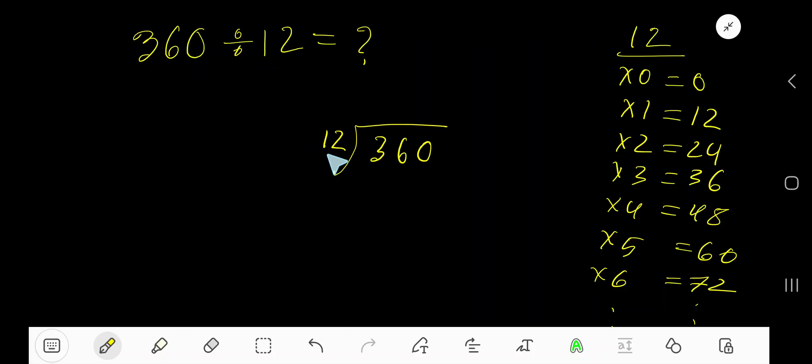360 divided by 12. Here 12 is the divisor, so we need the multiplication table of 12. 12 times 0, 12 times 1 is 12, 12 times 2 is 24. Look, just add 12 with the previous step: 0 plus 12 is 12.